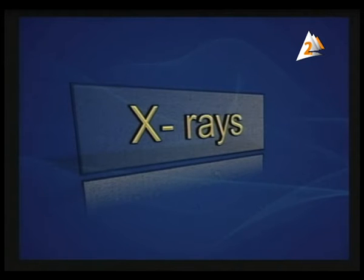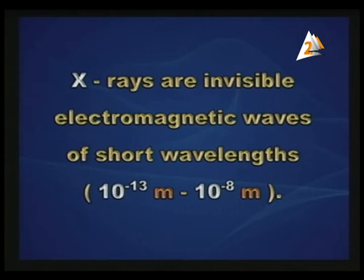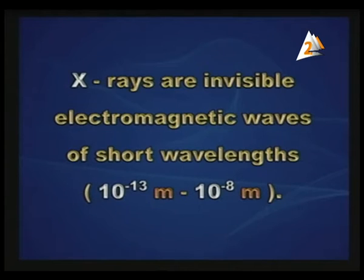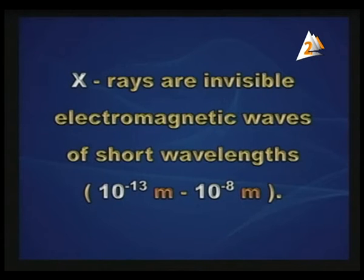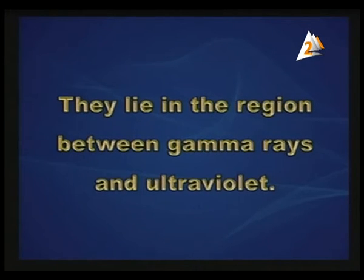X-rays are invisible electromagnetic waves of short wavelengths, ranging from 10⁻¹³ m to 10⁻⁸ m. They have short wavelengths and high frequencies, giving them high penetration power. They lie in the region between gamma rays and ultraviolet — gamma rays have frequencies higher than X-rays, while ultraviolet has frequencies lower than X-rays.